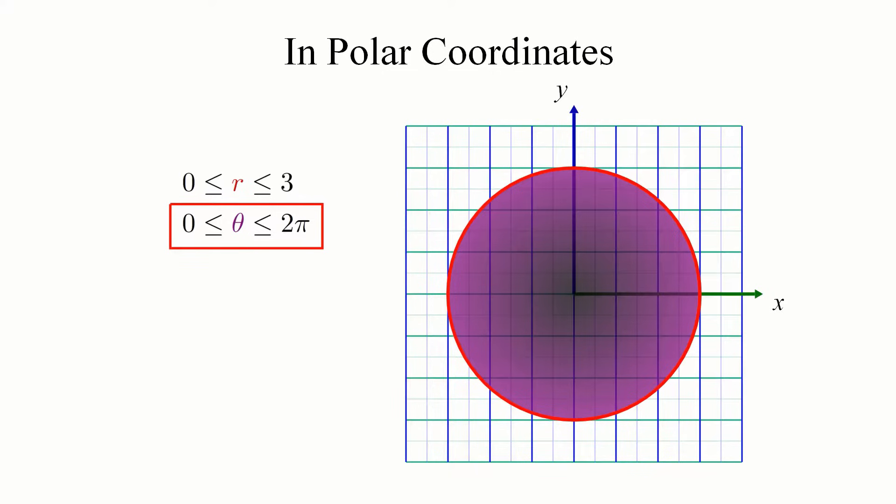Using these polar inequalities, we obtain much simpler integration bounds. We still can't integrate this directly yet, since we need to convert the integrand from x, y coordinates to r theta, but this is actually pretty simple if you remember the formulas relating them. In particular, r relates to x and y via the Pythagorean theorem. So r squared equals x squared plus y squared. This means our integrand can be rewritten as 9 minus r squared.